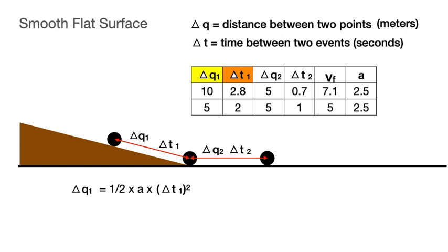So, we are very tempted to write a new formula. Delta q sub 1 equals one-half times a, the acceleration, times delta t sub 1 squared. Further experiments would show that this formula is generally true for falling bodies.